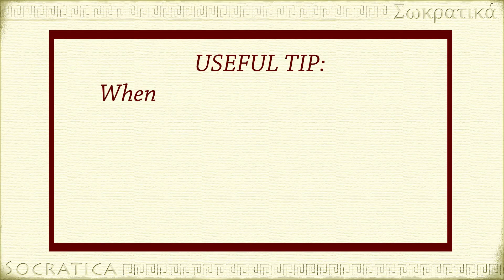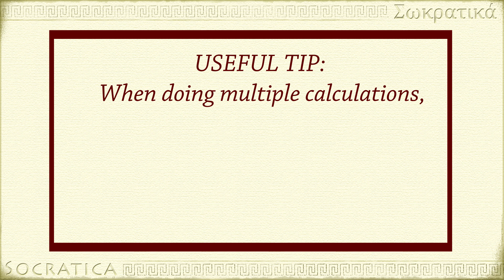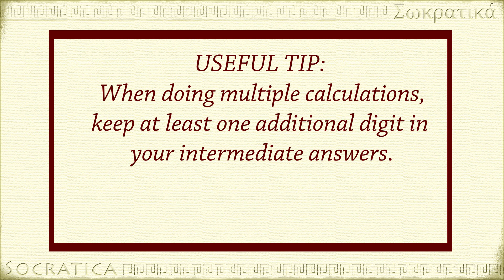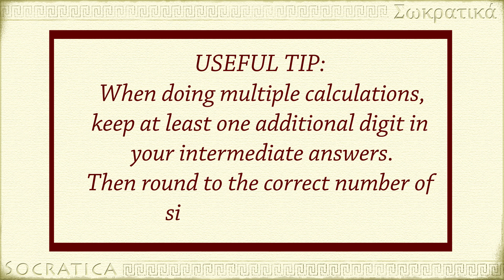Here's a useful tip for doing multiple calculations. When a calculation involves two or more steps and you're writing down intermediate answers, keep at least one additional digit past the number of sig figs. If you're using a calculator, this doesn't matter, because you can reuse intermediate answers without rounding. But if working on paper, this way you can still round off at the end to the correct number of significant figures without losing any significant data.